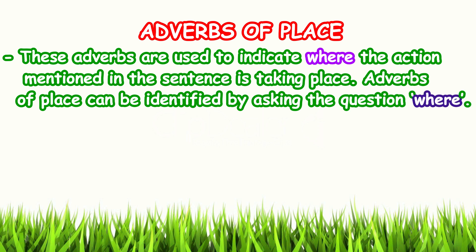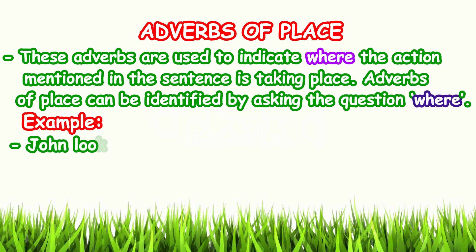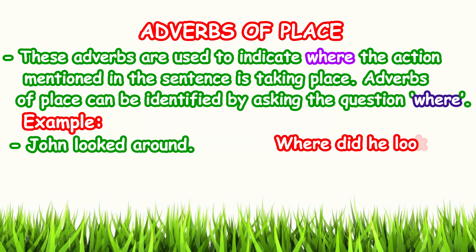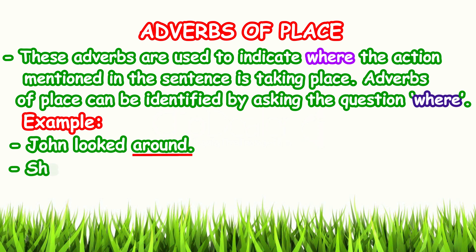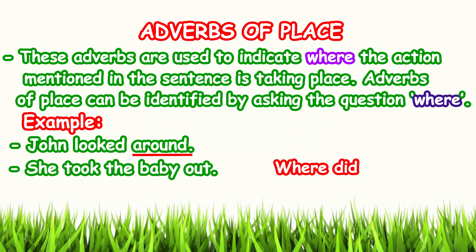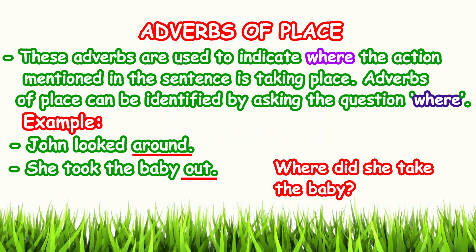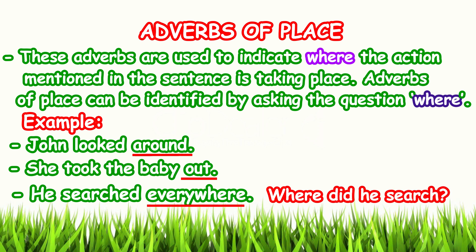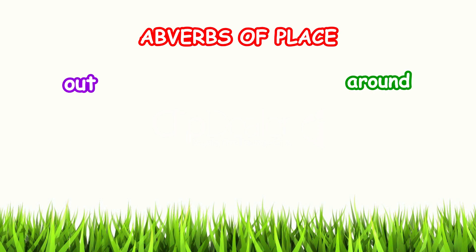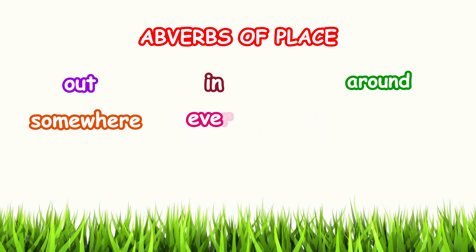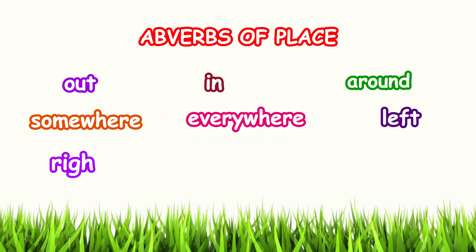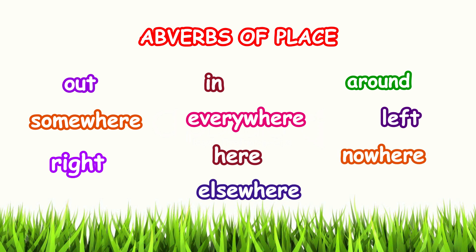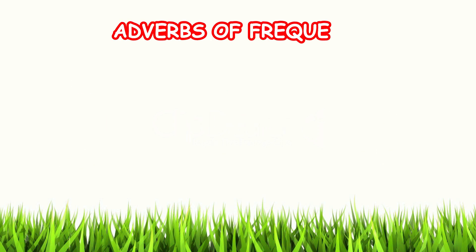For example: 'John looked around' — where did he look? Around. 'She took the baby out' — where did she take the baby? Out. 'He searched everywhere' — where did he search? Everywhere. So the words out, around, in, somewhere, everywhere, left, right, here, nowhere, and elsewhere are the adverbs of place.